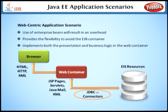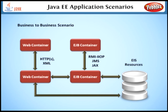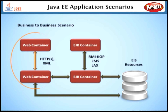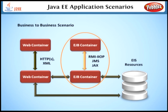The final type is the business-to-business scenario. This type focuses on peer-level interactions between both the web and EJB containers. In the Java EE programming model, we can create loosely coupled connections between web containers using XML data messaging over HTTP. Also, with the support of JMS, message-driven beans, and the Java APIs for XML, we can create loosely coupled connections between EJB containers.